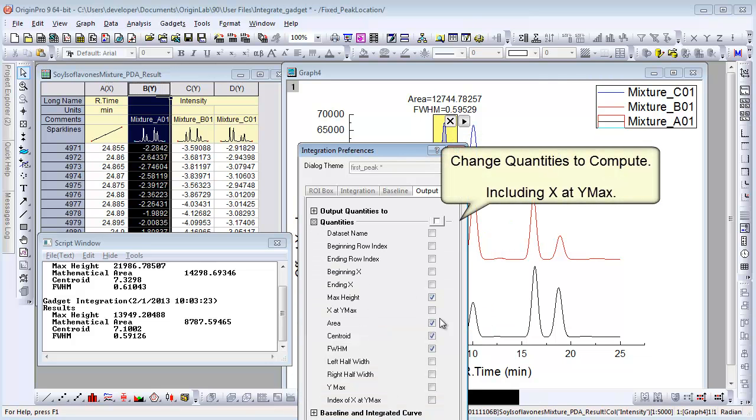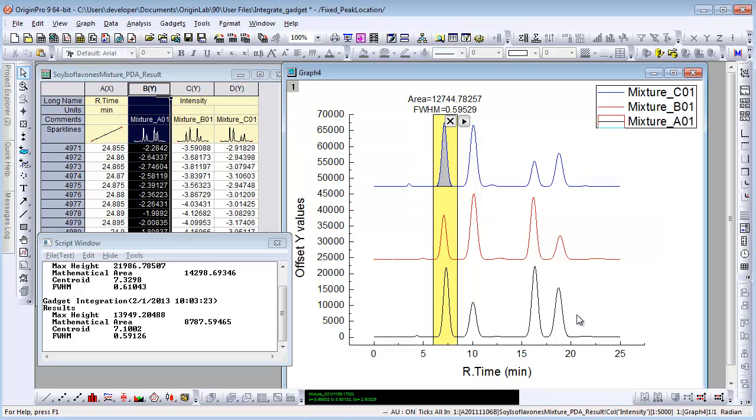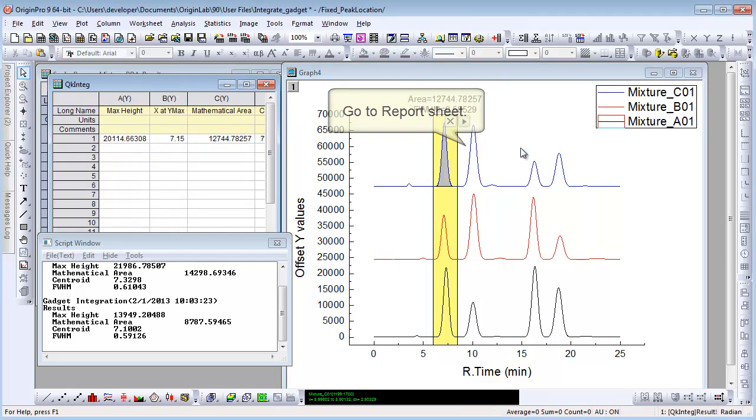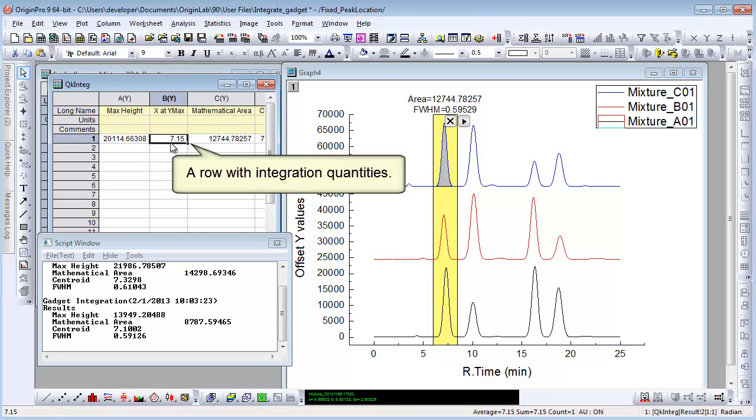You can also change the quantities to compute. For example, check X at Y maximum. Now let's output again and choose Go to Report Worksheet. A row with integration quantities show, including X at Y maximum.